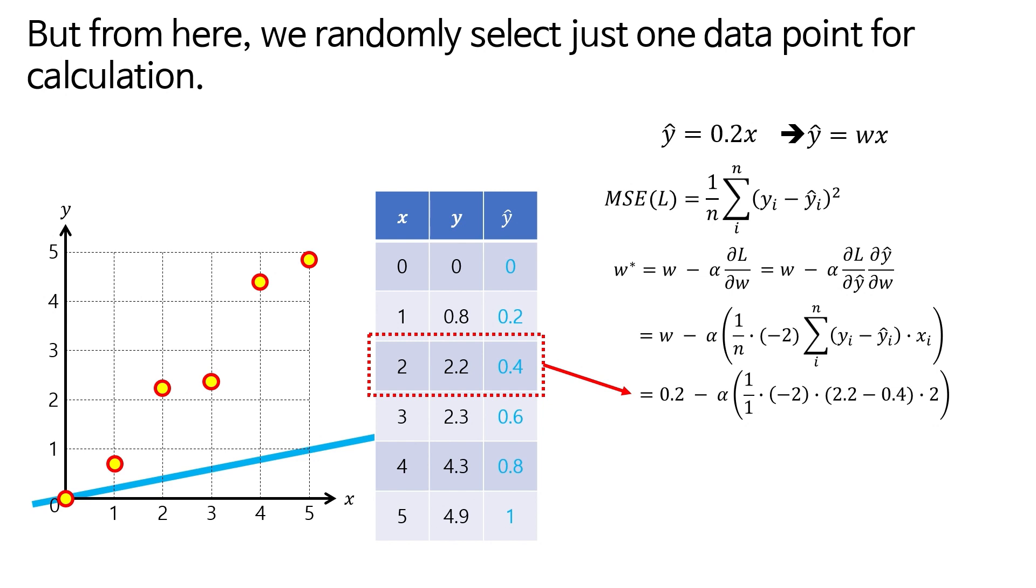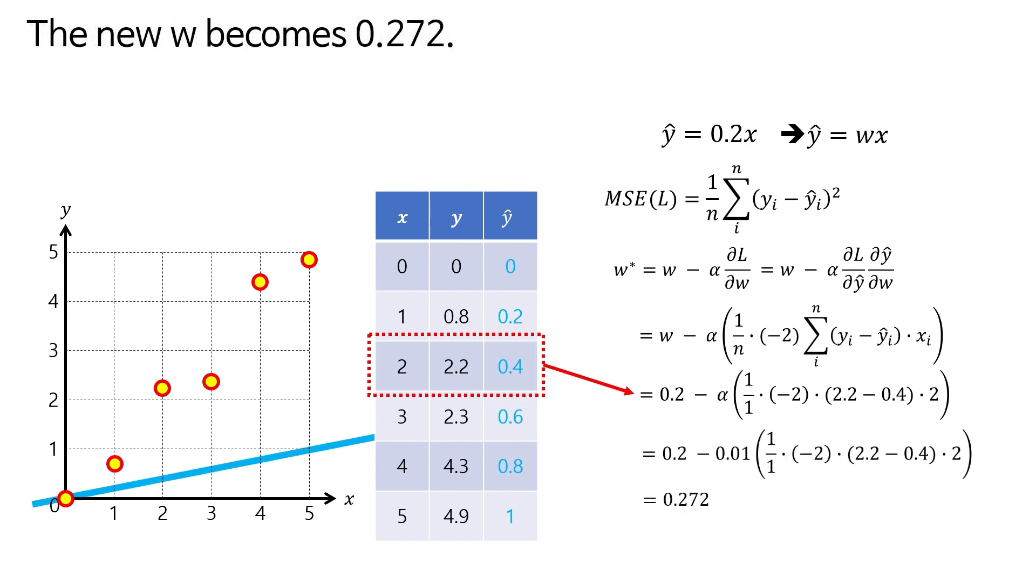But from here, we randomly select just one data point for calculation. The new W becomes 0.272.